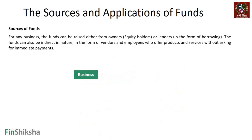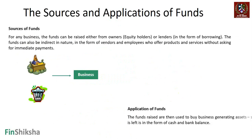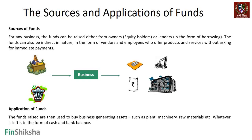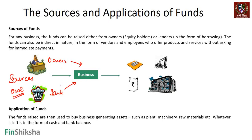Sources of funds can be raised from owners, or from banks in the form of lenders. Funds can also be indirect in nature. You can apply these funds by buying factories, raw materials, machinery, and the remaining lies in the form of cash - there is no other use. You raise money from owners and banks; this money comes into the system. These are all sources of funds - what you owe, and have to return.